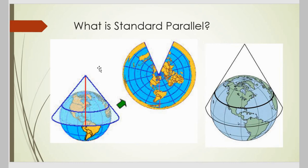The second terminology in the question is standard parallel. Parallels are the lines of latitudes which run on the surface of earth — these are imaginary lines. As shown in the diagram, when we connect different points of latitude of the same value, we have a parallel. In simple words, latitude and parallel look the same; the only difference is that latitude is a point while parallel is a line.